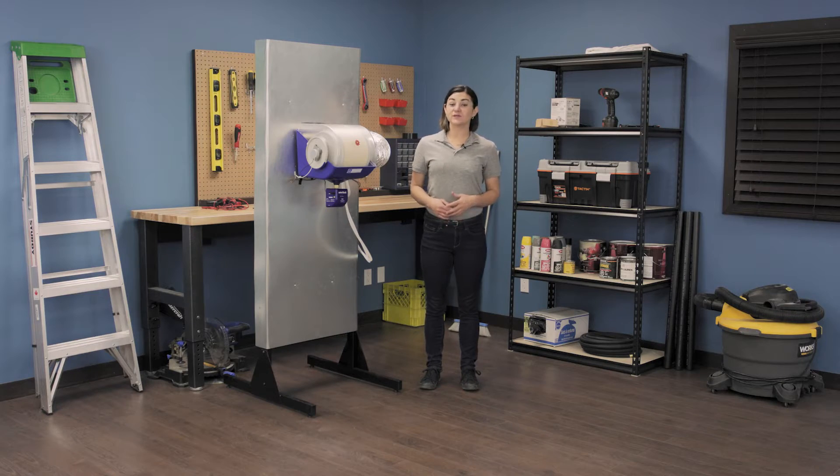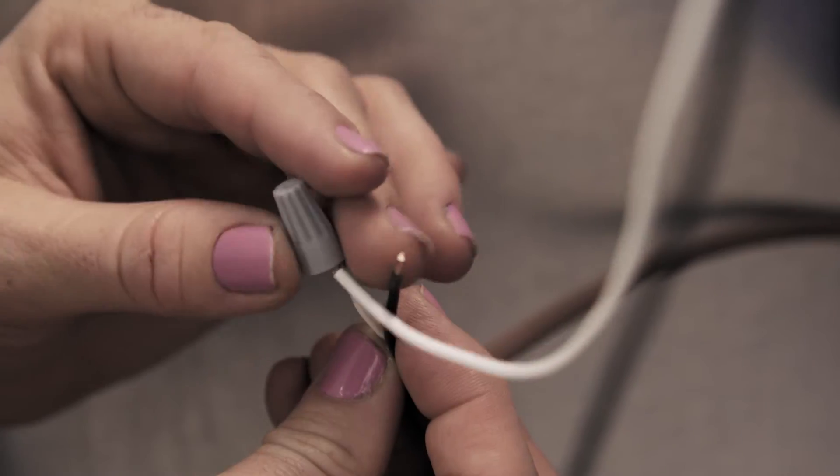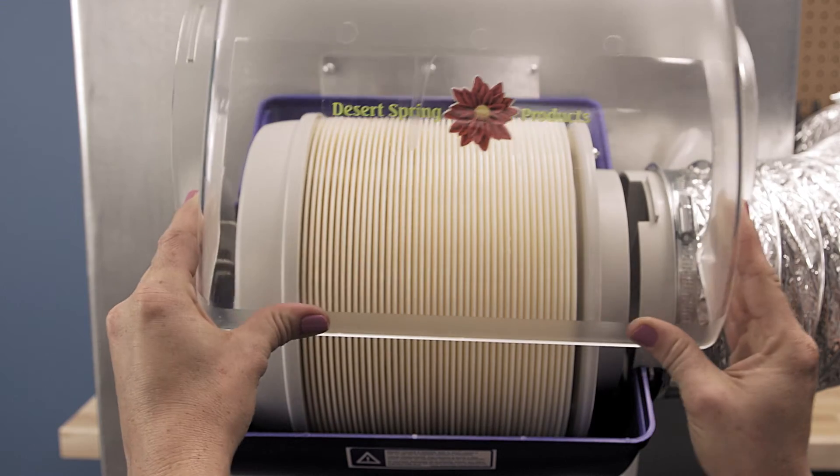Unclip the motor wires from the transformer. Open the humidifier cover by releasing the tabs to the humidifier housing.